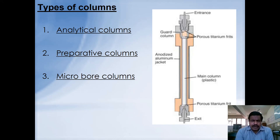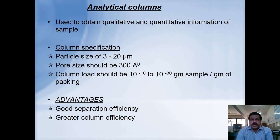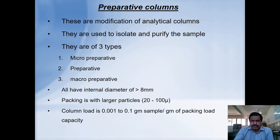There are different types of columns: analytical column, preparative column, and microbore column. The analytical column is used to obtain qualitative and quantitative information about the sample. Particle size ranges from 3 to 20 micrometers and pore size should be 300 Å. Column load is 10⁻⁴ to 10⁻³ grams of sample per gram of packing. The analytical column gives good separation efficacy. Preparative columns are modifications of analytical columns used to isolate and purify samples, with sub-types including micro-preparative, preparative, and macro-preparative.